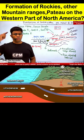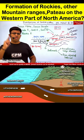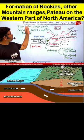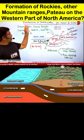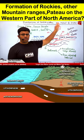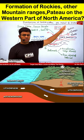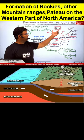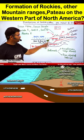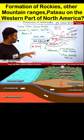Welcome to the first line of education and entertainment. Today we are going to understand the formation of the Rockies and other mountains on the western part of North America by ocean-continental convergence, 80 to 50 million years ago.